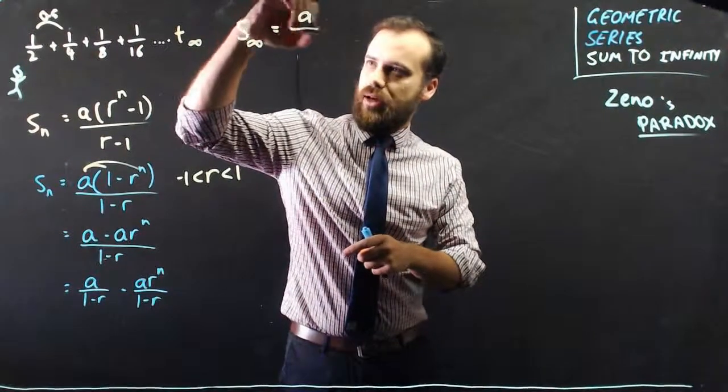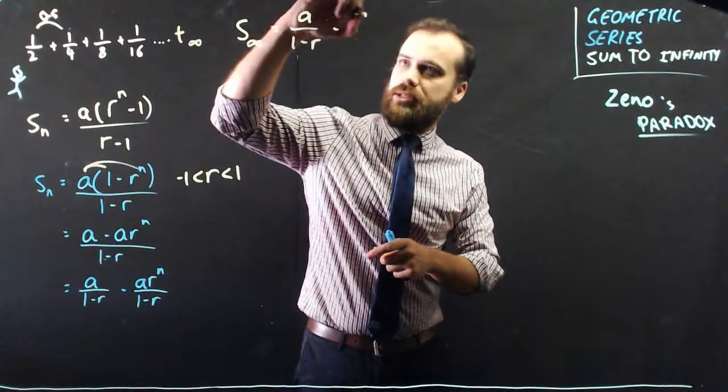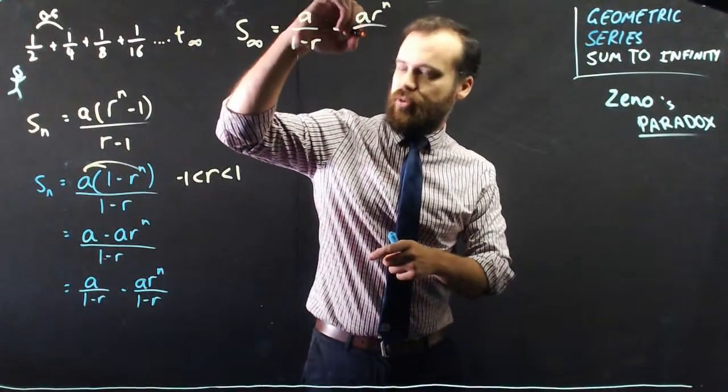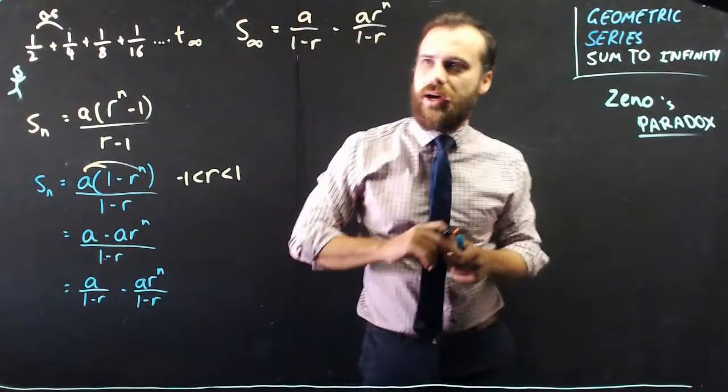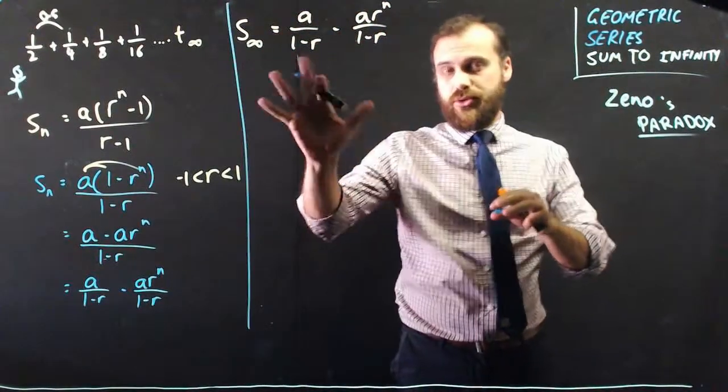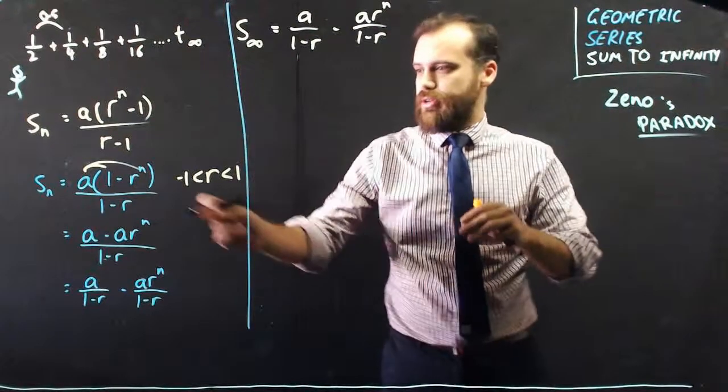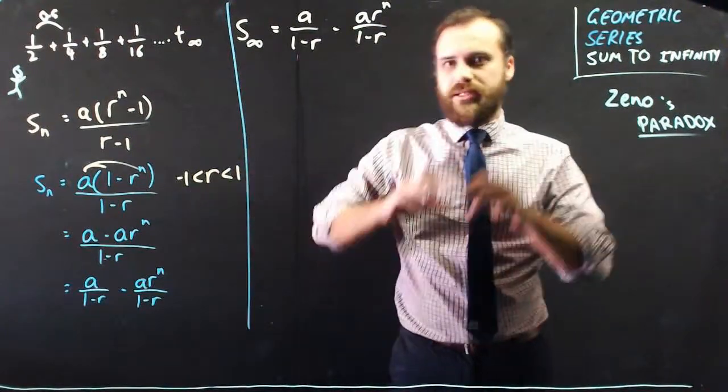And I can use this: a over 1 minus r minus ar to the n over 1 minus r. And so, when I do that, for any of these geometric series where the r is between 1 and negative 1, something amazing happens.